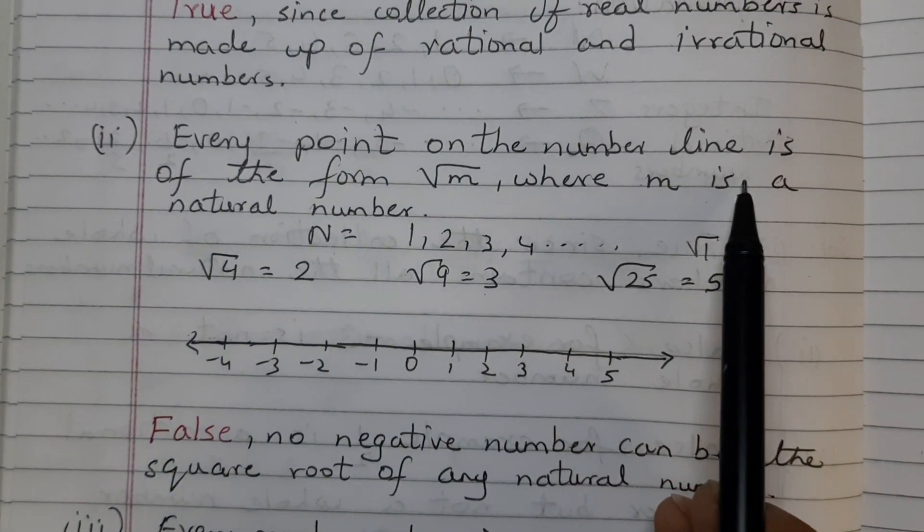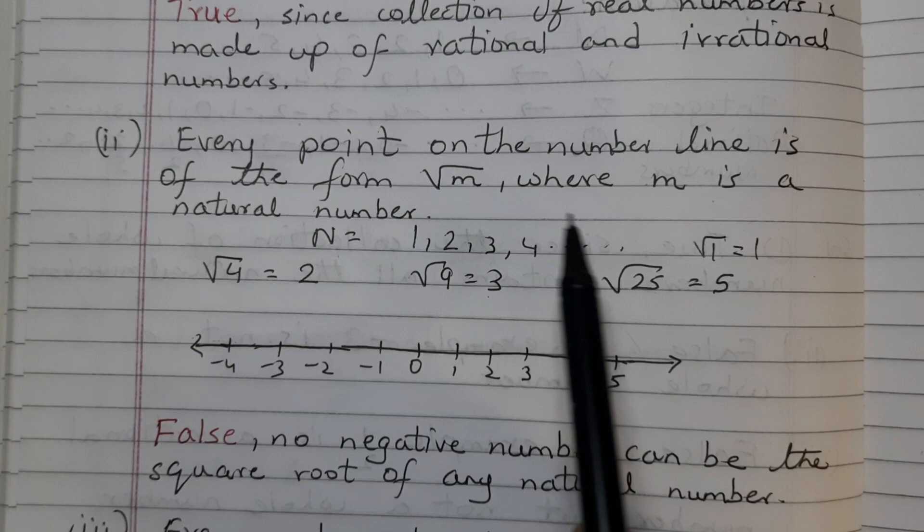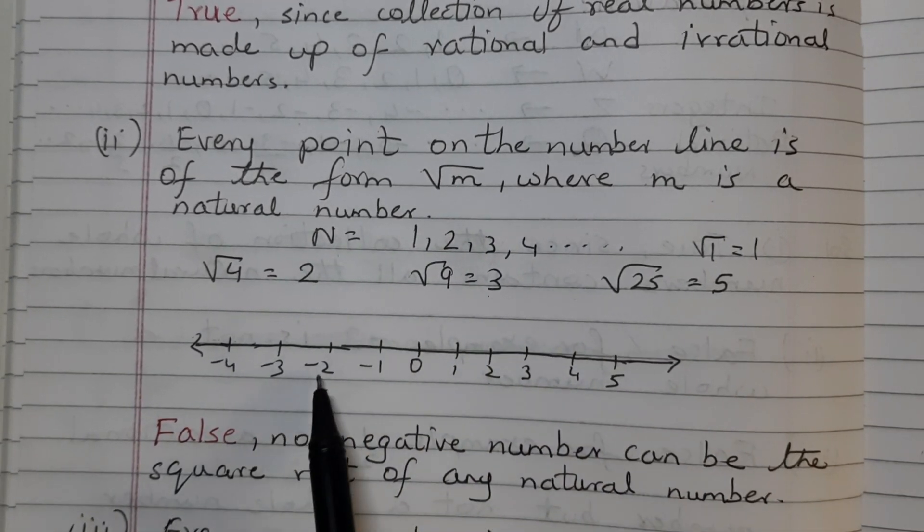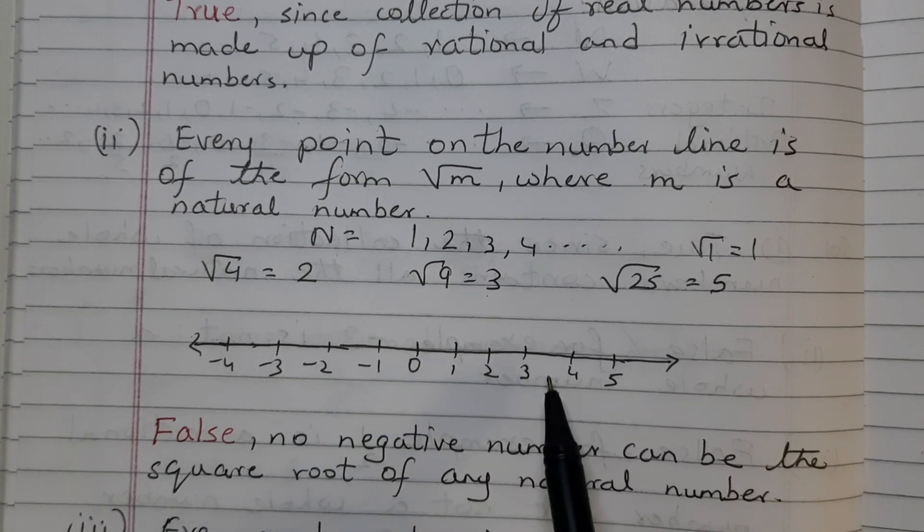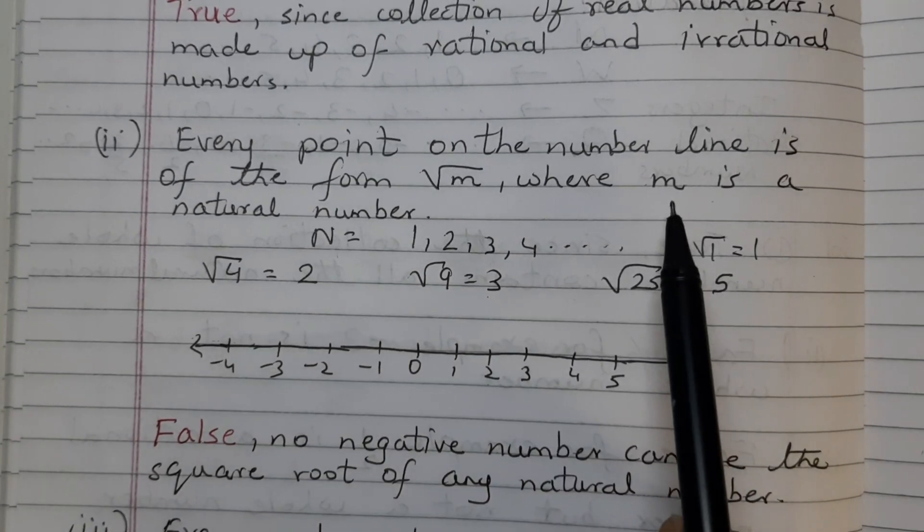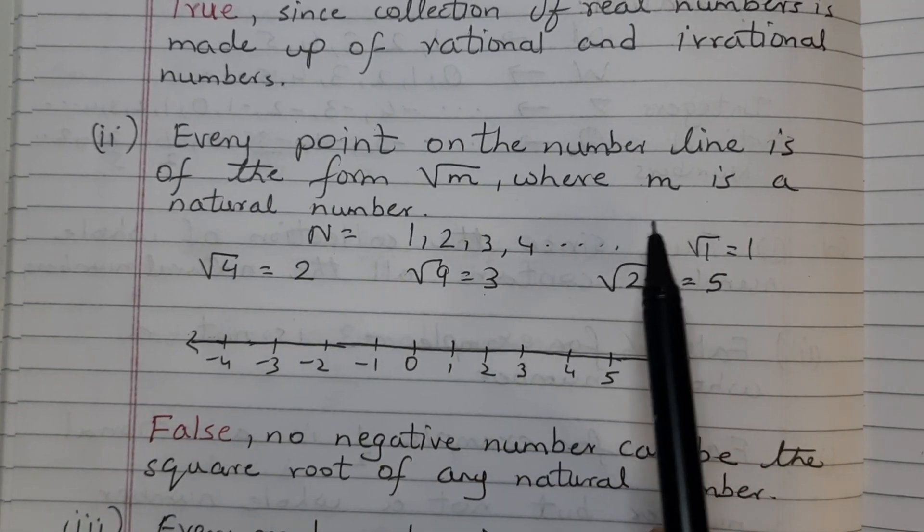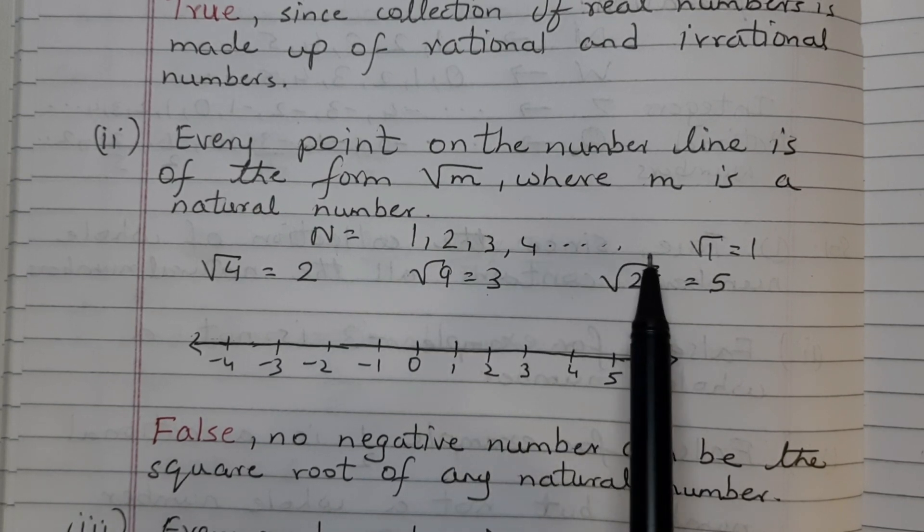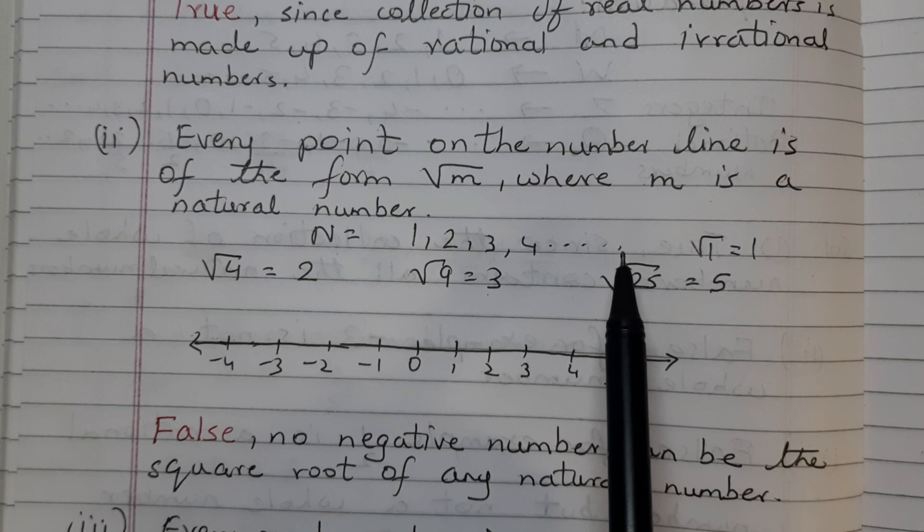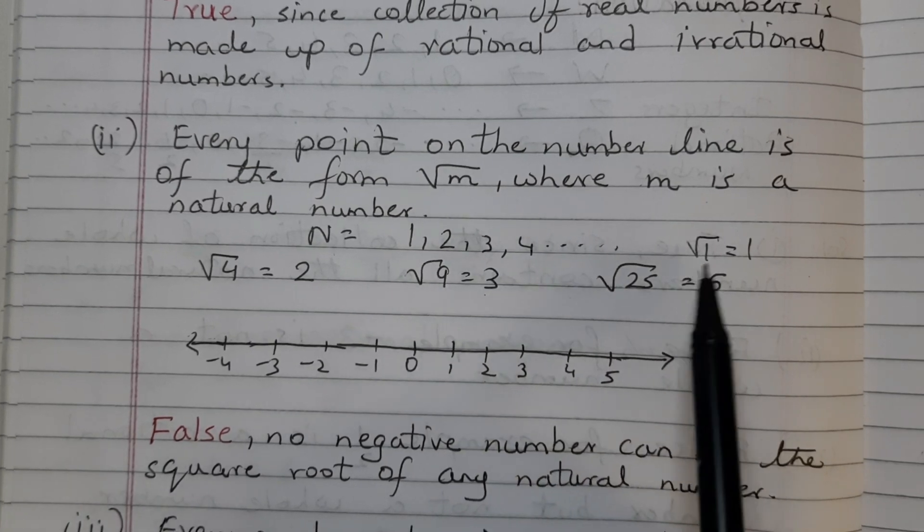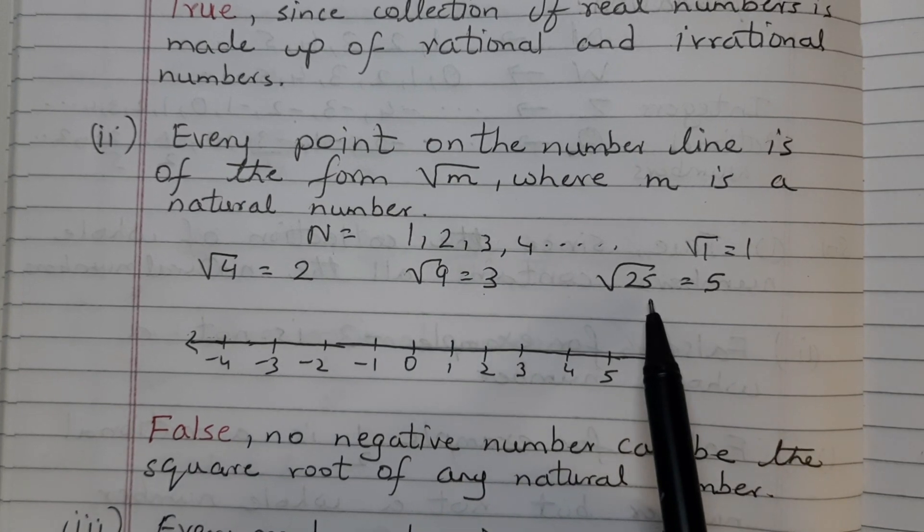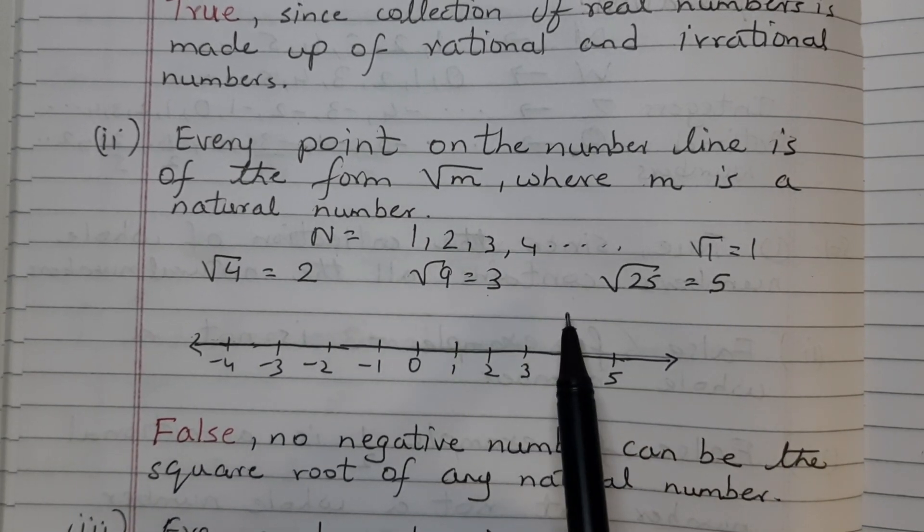Every point on the number line is of the form root M where M is a natural number. This is a number line with negative numbers, 0 and positive numbers. Here M is given as natural numbers that is 1, 2, 3, 4, 5, 6, 7, 8 and so on. If you take the root of natural numbers, root 1 is 1, root 4 is 2, root 9 is 3, root 25 is 5. So we are getting all positive numbers.